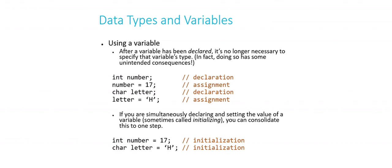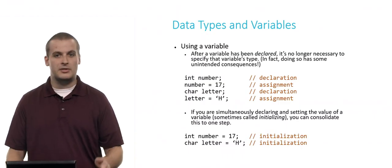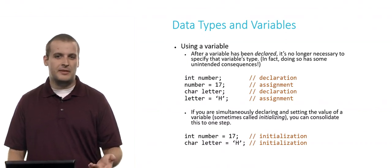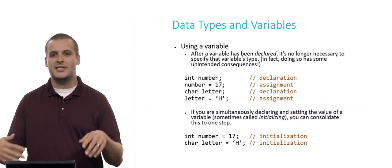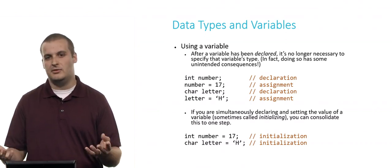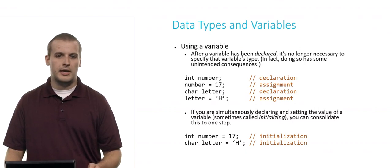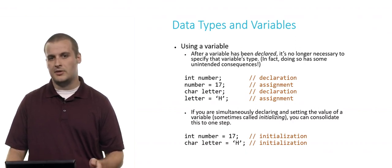We can repeat the process again with letter, char letter, semicolon. That's a declaration. Letter equals capital H. That's an assignment. Pretty straightforward, too. Now, this process might seem kind of silly. Why are we doing this in two lines of code? Is there a better way to do it? In fact, there is. Sometimes you might see this called initialization. It's when you declare a variable and assign it a value at the same time. This is actually a pretty common thing to do when you create a variable. You usually want it to have some basic value, even if it's zero or something. You give it a value. So you can initialize a variable. Int number equals 17 is the same as the first two lines of code up above. Char letter equals H is the same as the third and fourth lines of code above.